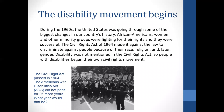During the 1960s, the United States is going through great changes. Women, African Americans, and other minority groups are fighting for their rights, and they're successful. One of those successes is the Civil Rights Act of 1964, which says it is illegal to discriminate against people because of their race, their religion, and later their gender — whether they're a man or a woman. But disabilities are not mentioned in the Civil Rights Act.